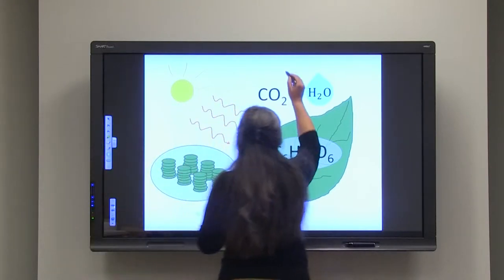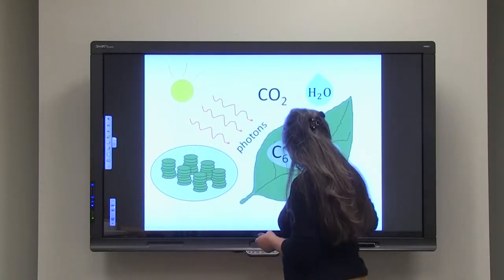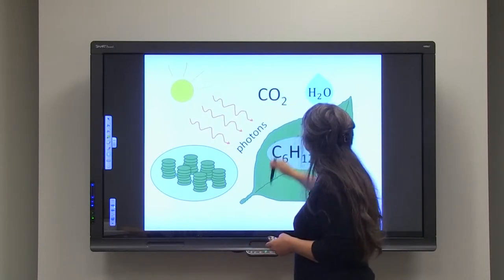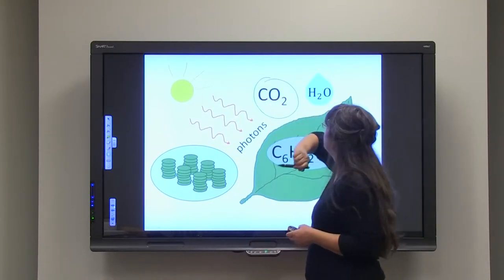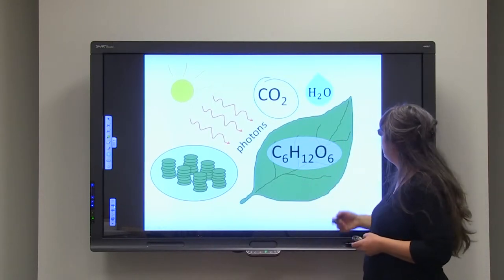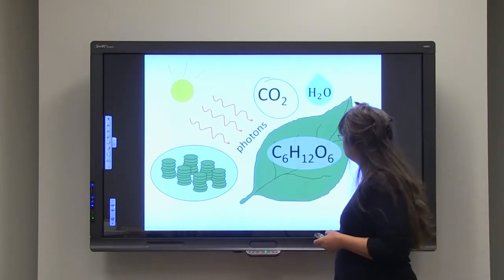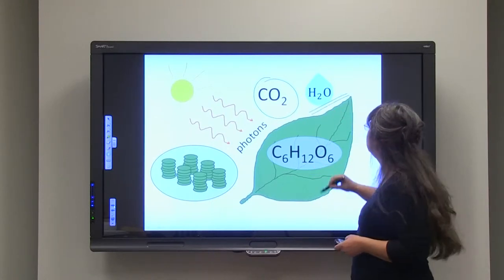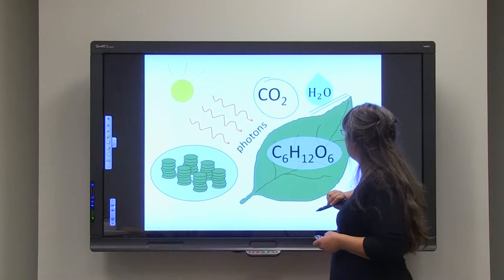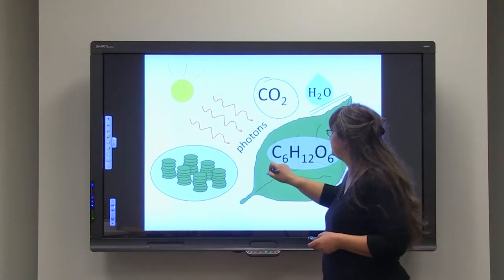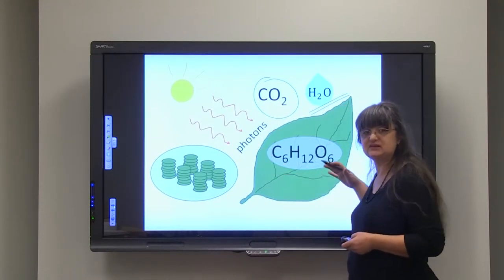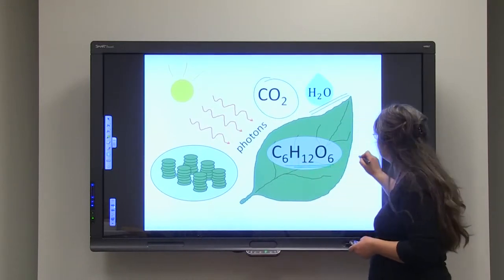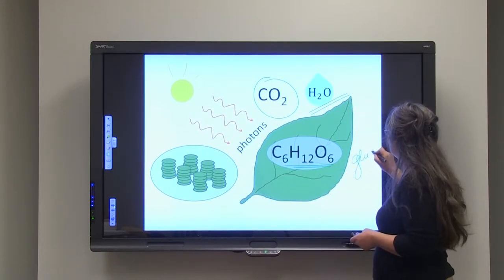They are utilizing carbon dioxide from the air. And the plants are taking water from the ground. And from these two molecules, together with photons, in the process that is called photosynthesis, glucose is formed. Okay? Glucose.